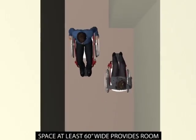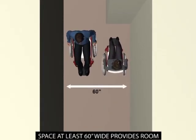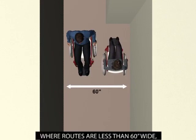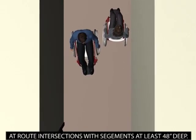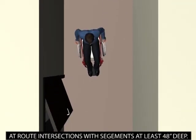Space at least 60 inches wide provides room for wheelchairs to pass. Where routes are less than 60 inches wide, passing space 60 inches by 60 inches minimum is required at 200 foot intervals. Passing space can also be achieved at route intersections with segments at least 48 inches deep.